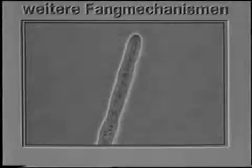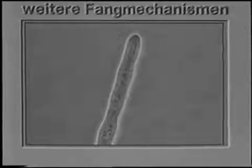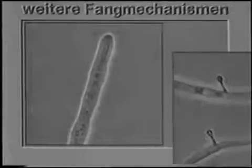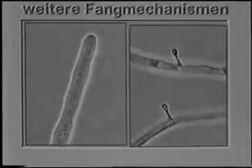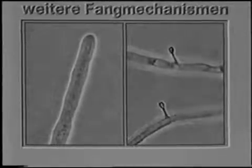Some fungi possess other capture mechanisms. Verticillium suchlasporium infects nematode eggs by using its hyphal tips. Pleurotus ostreatus produces droplets on its hyphae which are highly toxic to nematodes.